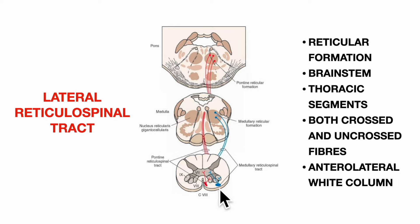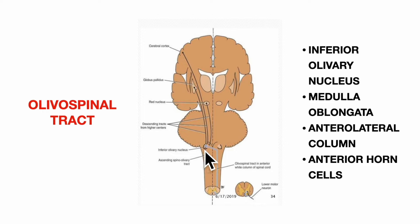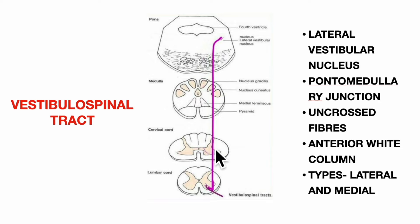Both the medial and lateral reticulospinal tracts terminate by synapsing with the neurons in lamina 7 of the spinal cord. The olivospinal tract originates from the inferior olivary nucleus in the medulla oblongata, descends to the spinal cord, lies in the anterolateral column of white matter, and synapses with the anterior horn cells. The vestibulospinal tract fibers arise from the lateral vestibular nucleus at the pontomedullary junction, descend uncrossed in the anterior white column, and synapse with the anterior horn cells. It has two types: the lateral vestibulospinal tract, which controls extensor muscle tone, and the medial vestibulospinal tract, which is responsible for movement of the head.